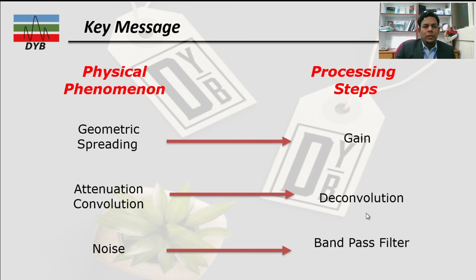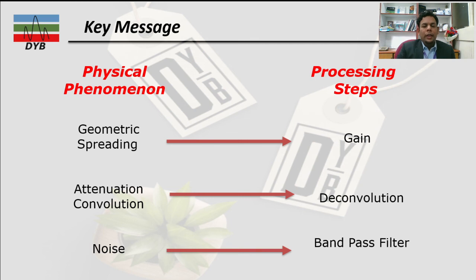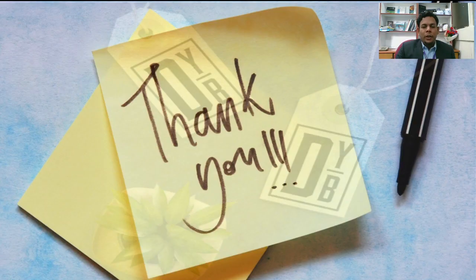The key message for gain functions: when dealing with geometric spreading — where your wave is decaying as it moves far from the source — you have loss of amplitude. For that purpose, these types of gains are used to improve seismic wave attenuation. For attenuation or convolution, we can apply deconvolution. For noise elimination, as discussed previously, we normally use a band-pass filter. Thank you so much, hope you have enjoyed this lecture.